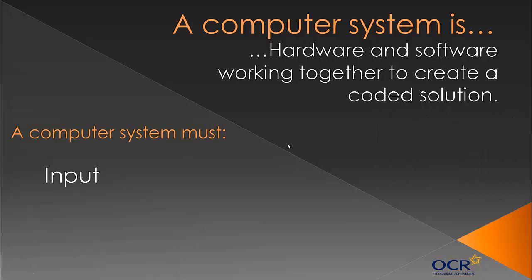A computer system must be able to receive input, process something, and produce output. Breaking a computer system into input, process, and output: an input device might be a touchscreen or keyboard; processing happens in the CPU, which we'll look at in the next video, along with sound cards and graphics cards; and output would be a monitor, speakers, printer, etc. That's quite a common exam question and if you use your common sense you'll be fine.